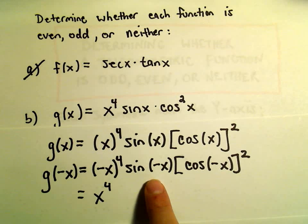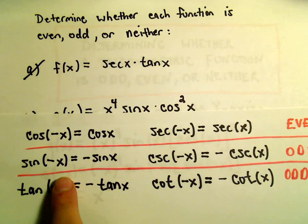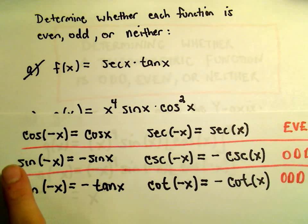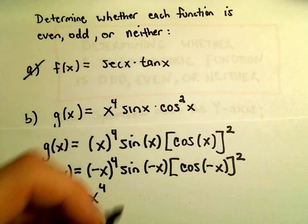We said sine of negative x in terms of being even and odd. We said sine was odd, therefore sine of negative x equals negative sine x.